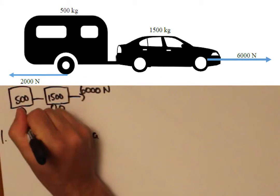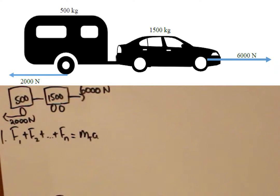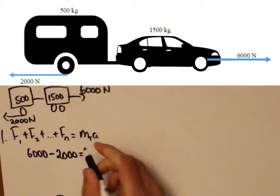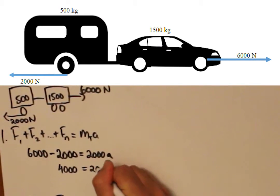Now let's consider if there was a frictional force of 2000N acting on the caravan. The vector sum of the two forces equals 4000N, which must equal the total mass multiplied by the acceleration. Solving the acceleration gives us 2m per second squared.